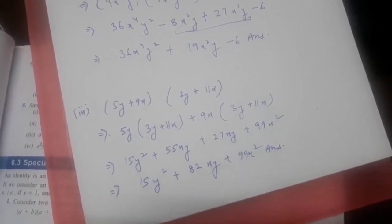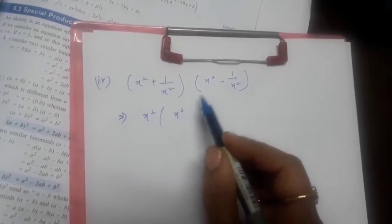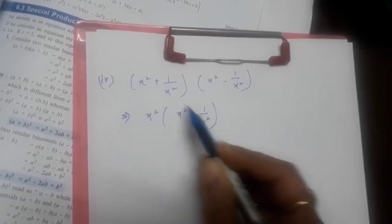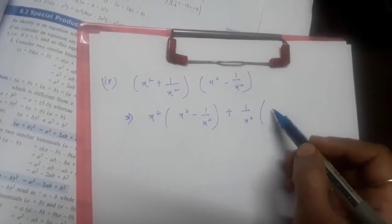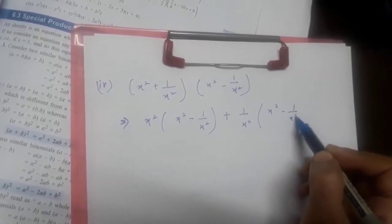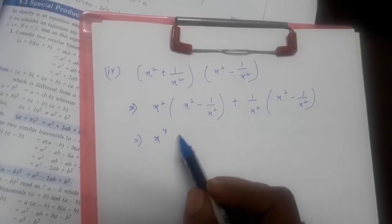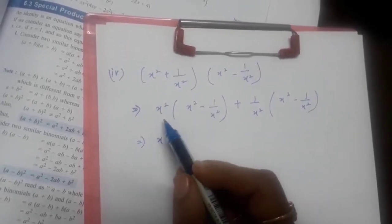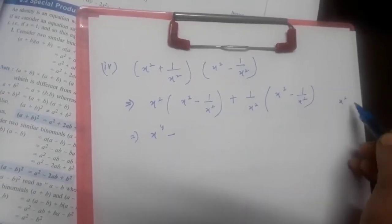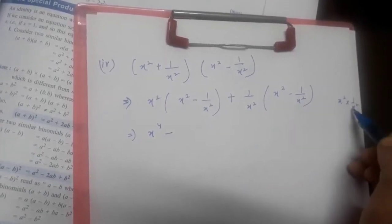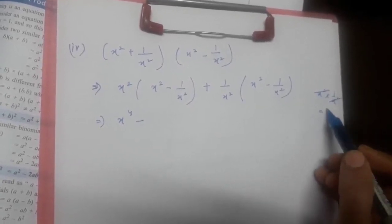Now come to the fourth part. In the fourth part, first x² will get multiplied with (x² − 1/x²), then plus sign, then 1/x² will get multiplied by (x² − 1/x²). In our next step: x² × x² = x⁴, and x² × (−1/x²): x² and 1/x² will get cancelled, so the answer would be −1.